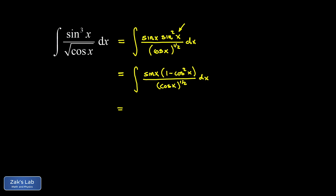What I'm going to do here is take 1 divided by cosine to the one half, and cosine squared divided by cosine to the one half. So 1 divided by cosine to the one half is cosine x to the negative one half, and the other term — cosine squared divided by cosine to the one half — gives cosine to the three halves.